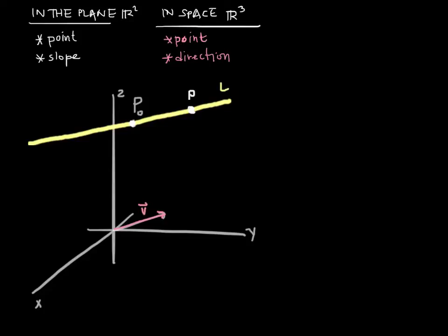So p-naught has a position vector that I'm going to call r-naught. p similarly has its own position vector, which I'm going to call r. Let's label again what we have exactly so far. p-naught is the point we know about that is on the line. r-naught is its position vector. As luck would have it, the components of the position vector for p-naught are the same as the components of the point itself. It's just that p-naught is a point and r-naught is a vector.